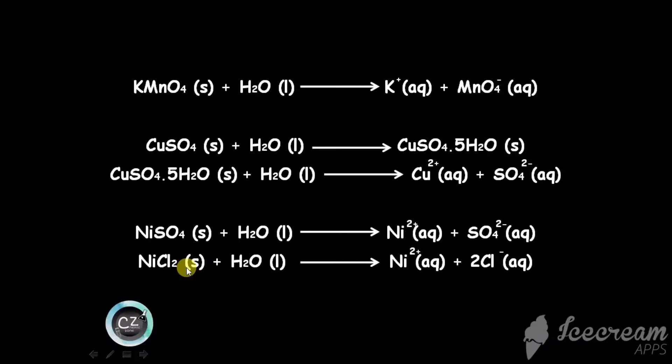In this video, I will explain why aqueous solutions of potassium dichromate do not obey Beer-Lambert's law. Potassium permanganate, copper sulfate, nickel sulfate, and nickel chloride react with water and dissociate into ions.